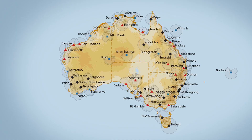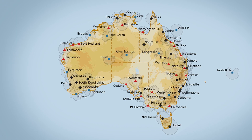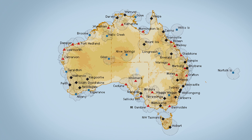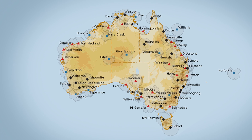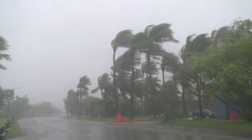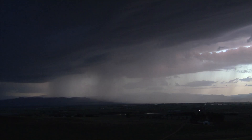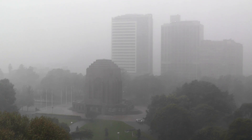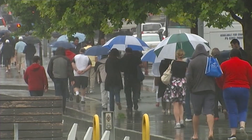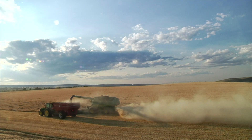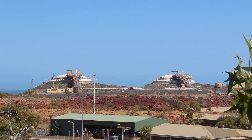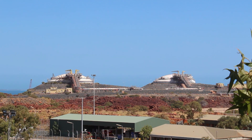Australia has the fourth largest radar network in the world with more than 60 radars. These radars are generally located in areas that are prone to high impact weather such as tropical cyclones or thunderstorms that might affect large populations or areas of economic investment such as agricultural or mining areas.